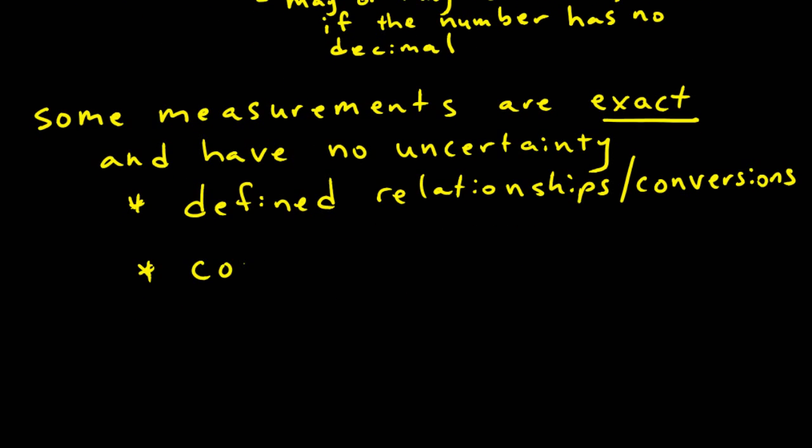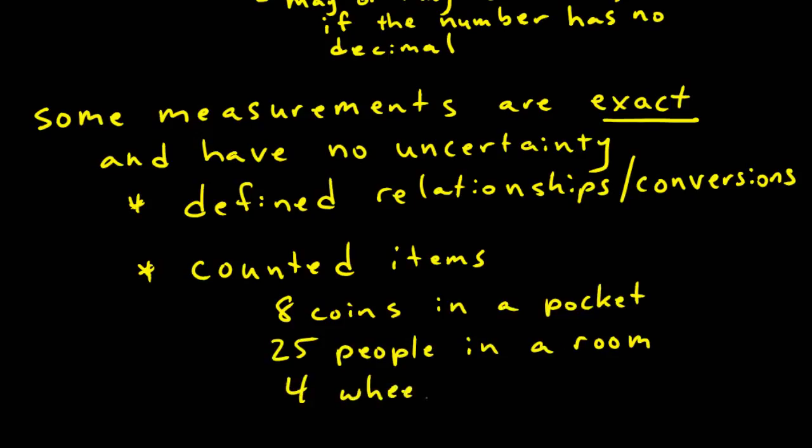Counted items may also be exact. For example, if we counted eight coins in a pocket, or 25 people in a room, or four wheels on a car, all of these are examples of exact values. And once again, exact values have an infinite number of significant figures.